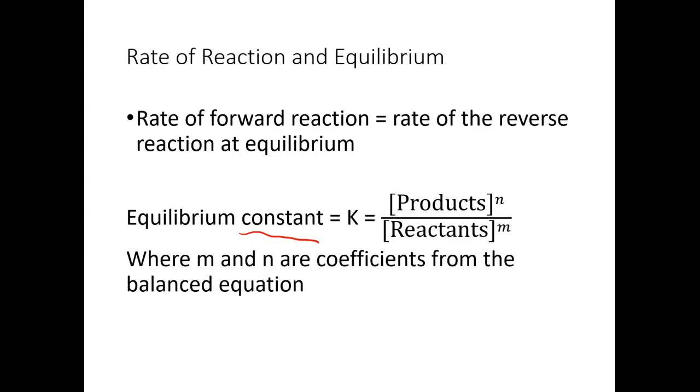The equilibrium constant is symbolized by a capital K. We'll talk about some other types of equilibrium constants that we'll see. So sometimes you might see KEQ, KA, KB. So KEQ is just emphasizing that it's at equilibrium. KA we'll look at with acids, KB with bases.